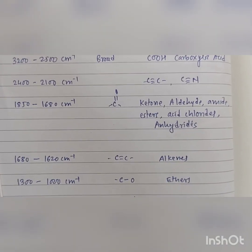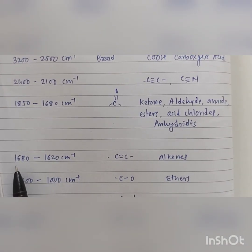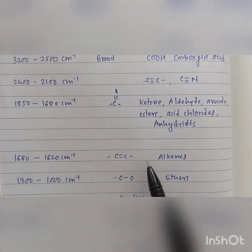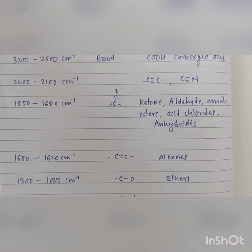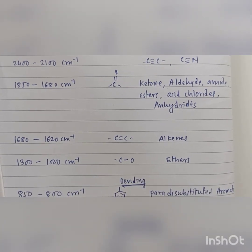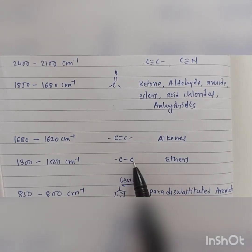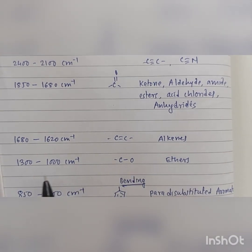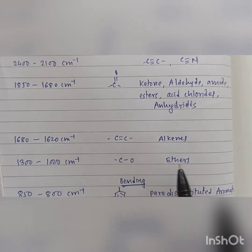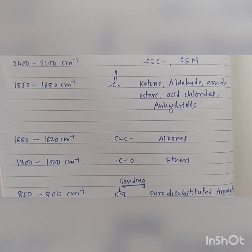The next region is 1680 to 1620 centimeter inverse. This is a typical C=C stretch. Then a characteristic C-O single bond stretching is observed between 1300 to 1000 centimeter inverse, and ethers can be identified in this particular region of IR.